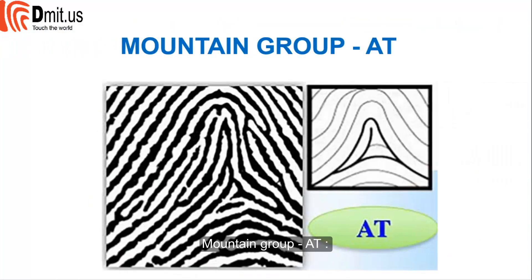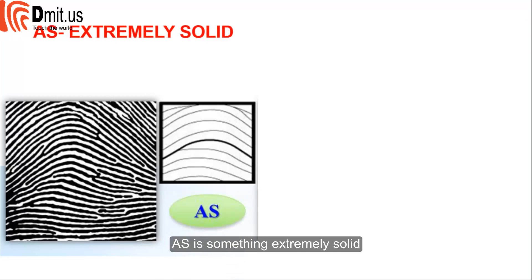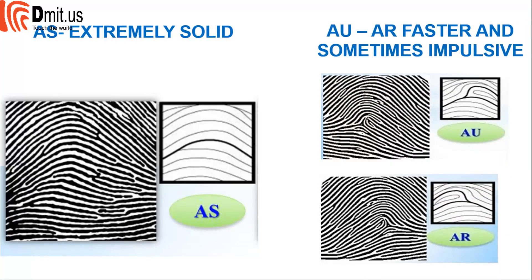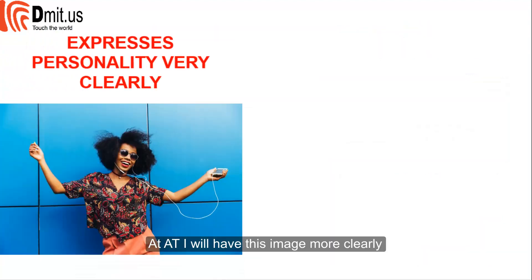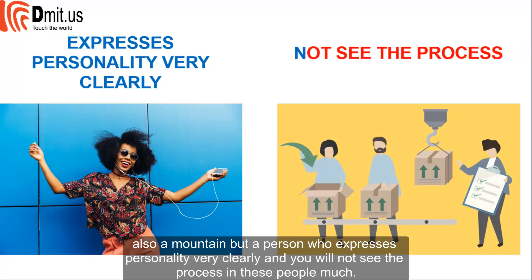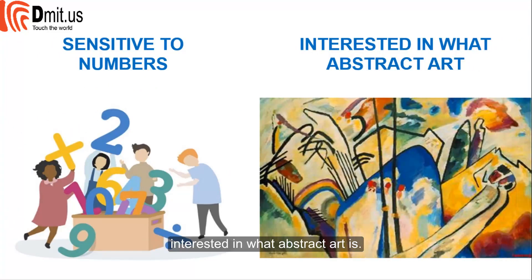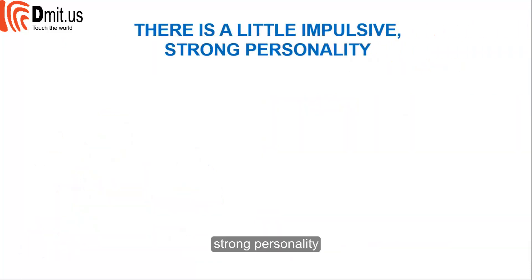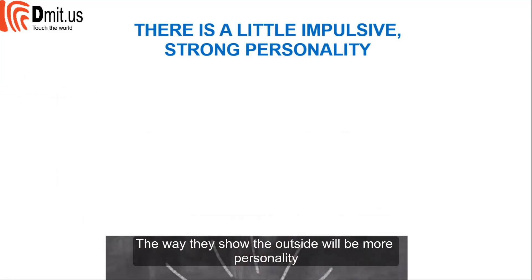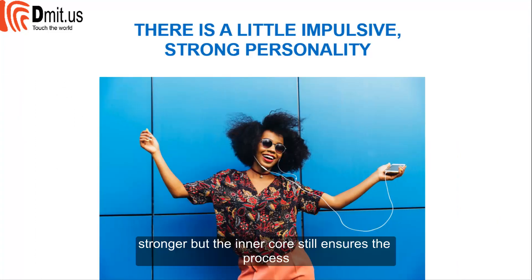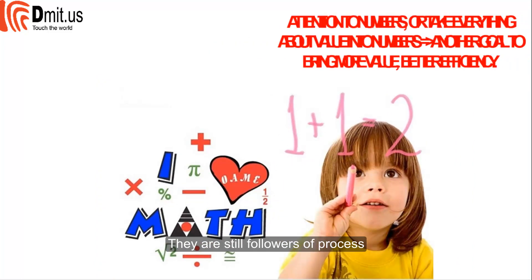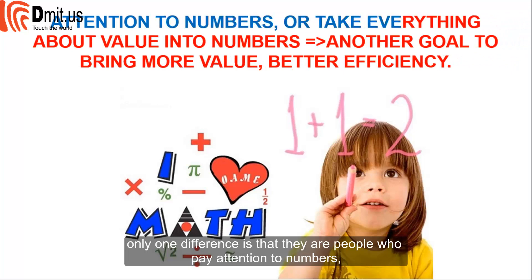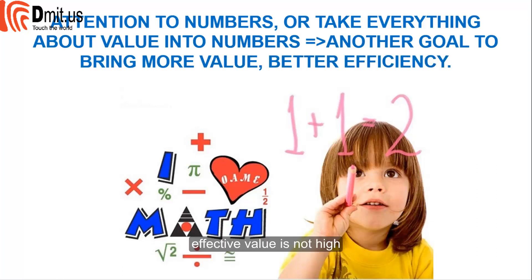The AT group (coded as 80) is something extremely solid. AU and AR can be faster and sometimes impulsive, but AT presents a more defined personality image — a mountain person who expresses personality very clearly. You will not see the process in these people much. They are extremely sensitive to numbers and interested in abstract art. There is a little impulsiveness and strong personality on the outside, but the inner core still ensures process. They calculate feasibility and effective value, and if it's not high, they will give up and switch to a more valuable goal.